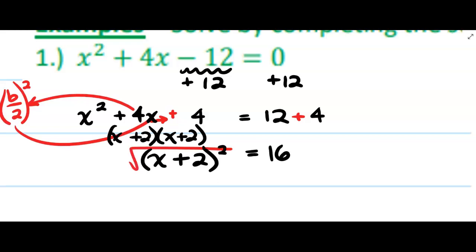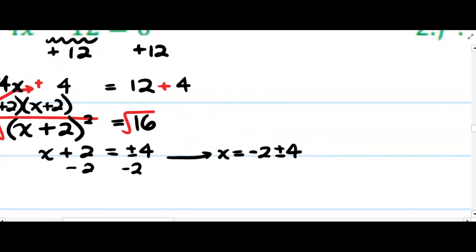At this point, all I have to do is take the square root of both sides. Subtract 2 from both sides, so x is negative 2 plus or minus 4, which again we would split apart.